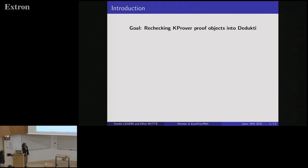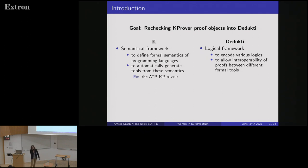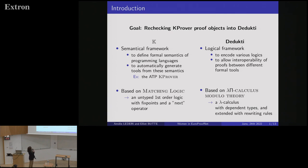The goal here is to check Kprover proof objects into Dedukti. To remind you, the K framework is a semantical framework to define formal semantics of programming languages and to automatically generate tools from these semantics. As an example, there is a parser, an interpreter, but also an automatic theorem prover named Kprover. For Dedukti, it's a logical framework to encode various logics and allow interoperability of proofs between different formal tools. Both of these tools are based on matching logic.